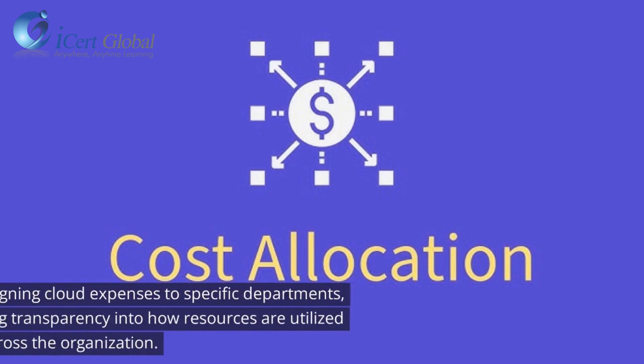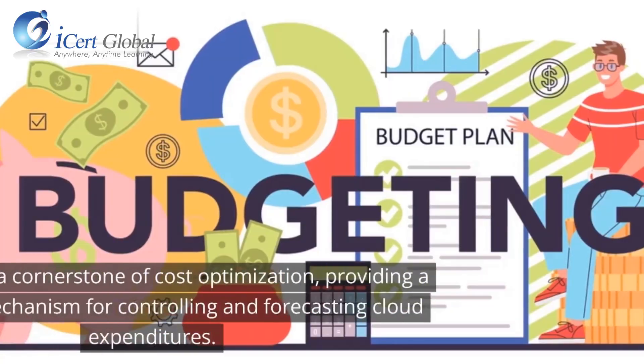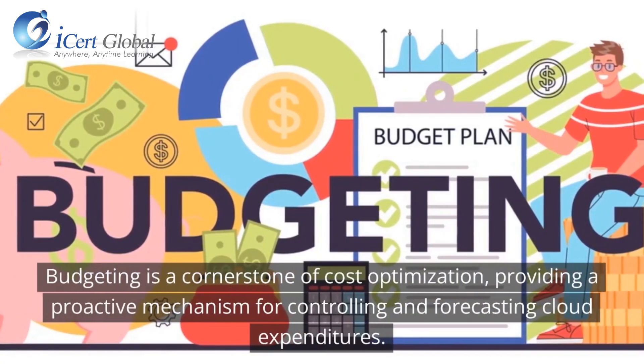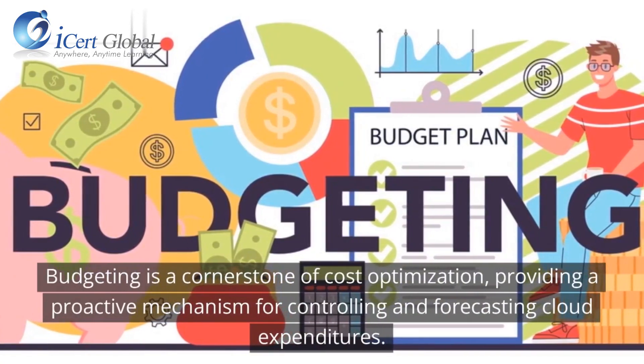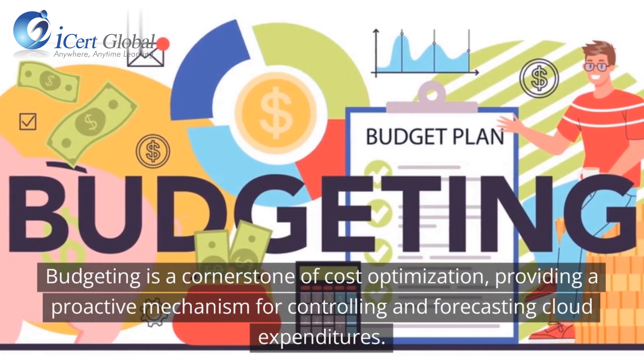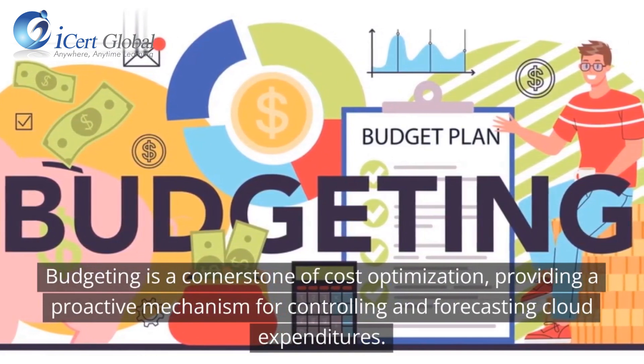Cost allocation involves assigning cloud expenses to specific departments, projects, or teams, providing transparency into how resources are utilized across the organization. Budgeting is a cornerstone of cost optimization, providing a proactive mechanism for controlling and forecasting cloud expenditures.